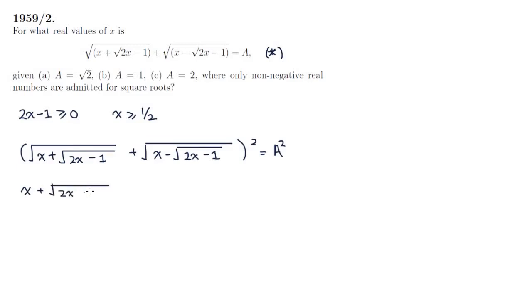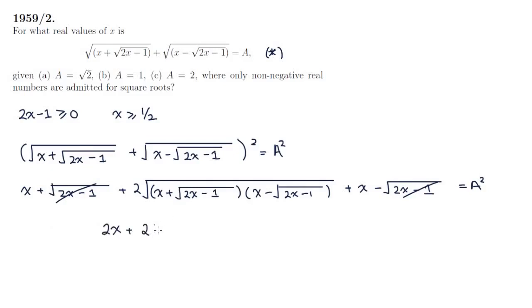a squared is x plus root 2x minus 1. Then 2ab gives us 2 big square root x plus small square root 2x minus 1 multiplied by x minus small square root 2x minus 1 plus b squared, which is x minus root 2x minus 1 equals a squared. Let's cancel these and collect the two x's and simplify a bit. So 2x plus 2 and then a big square root and we're going to claim that under this big square root is going to be x squared minus 2x plus 1.